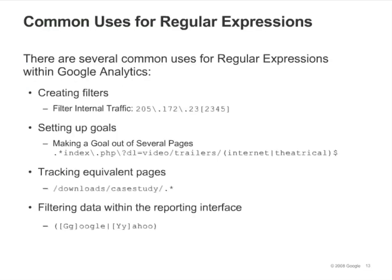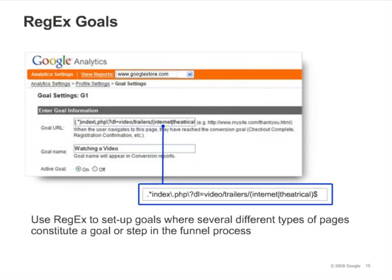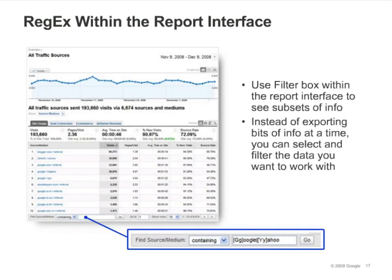You'll find lots of applications for regular expressions in Google Analytics. Some common examples are: filtering out internal traffic by specifying a set of IP addresses, setting up a goal that needs to match multiple URLs, tracking equivalent pages in a funnel, and using the filter box on your reports to find specific entries in a table. Here's an example of a custom filter that uses a simple regular expression, a regular expression used to define a goal URL, and how you might use regular expressions to group pages or funnel steps — allowing you to track them as one funnel step rather than individually.